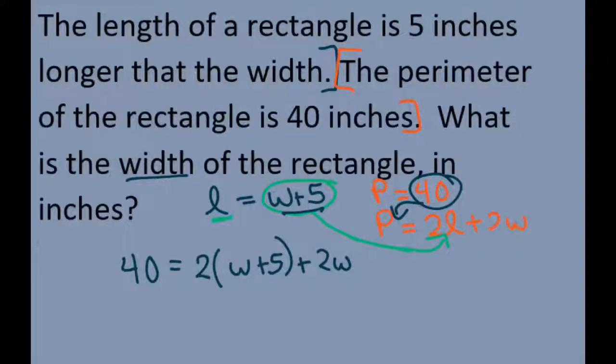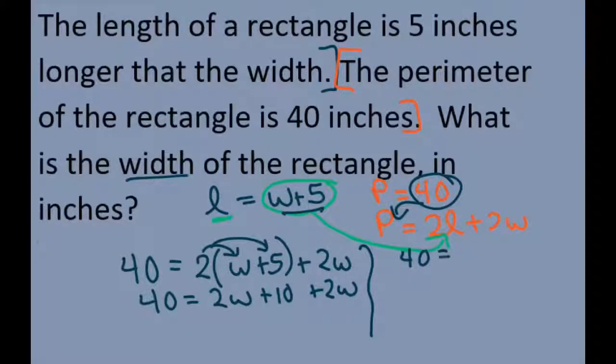And then we're just solving for the width. So 40 equals 2W, don't forget to distribute, plus 10 plus 2W. We're going to simplify. So you get 40 equals 4W plus 10. Subtract 10 from both sides of the equation. You get 30 equals 4W.